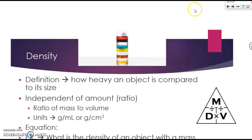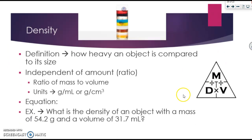The last part of the chapter covers density and specific gravity. This is probably review, as it's often covered in middle school and integrated science classes. Density is defined as how heavy an object is compared to its size. It is independent of amount because it is a ratio — anything independent of amount is an intensive property. It is a ratio of mass to volume, and its units are usually grams per milliliter or grams per cubic centimeter. The equation for density, which you should know well, is: density equals mass divided by volume.